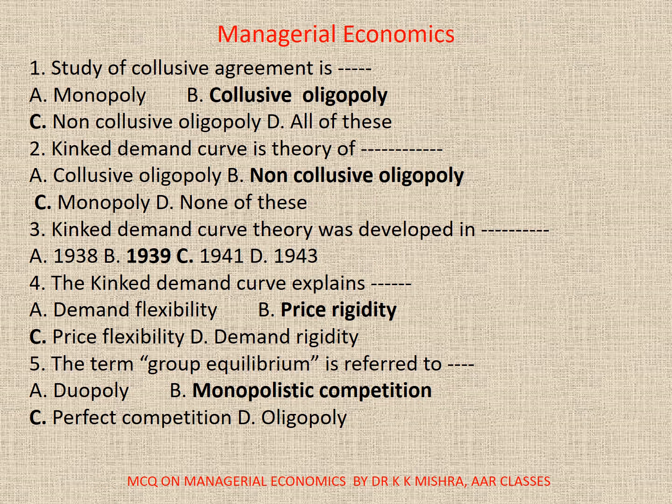Number 1. Study of Collusive Agreement is: A. Monopoly, B. Collusive Oligopoly, C. Non-Collusive Oligopoly, D. All. Correct option is B. Collusive Oligopoly.